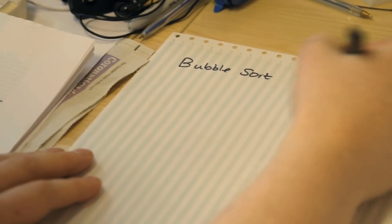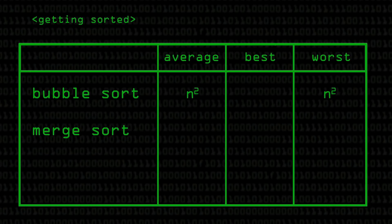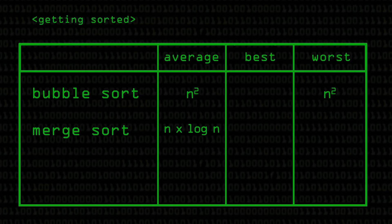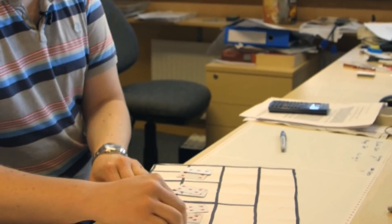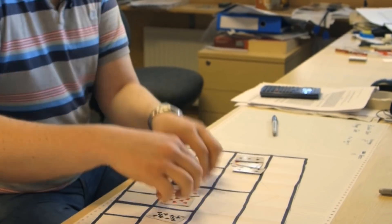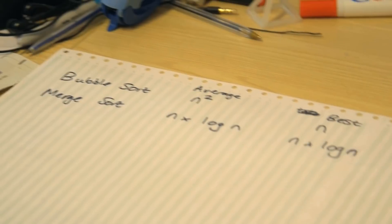Bubble sort scales with the square of the input size — O(N²). Merge sort scales with N times the log of the input size — O(N log N). A log is just the inverse of a power: 10 to the power of 3 is 1,000, so log base 10 of 1,000 is 3. Regardless of the base, it's just a constant factor and that doesn't matter. Merge sort will always take N log N runtime in best, worst, and average case, because you always have to split the list in two, and two again, and then compare and merge everything back together.